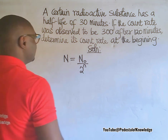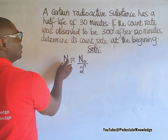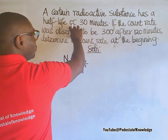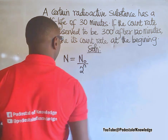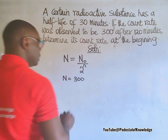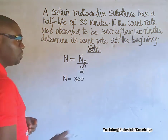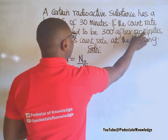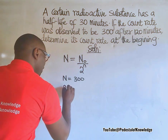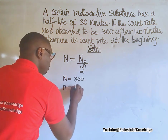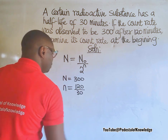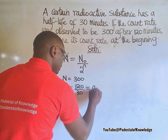N is the number of atoms remaining — that is the count rate that was observed after 120 minutes, which is 300. So N is equal to 300. The number of half-lives is obtained by dividing the time interval by the half-life. That means the number of half-lives is equal to 120 minutes divided by 30 minutes, which gives us 4.